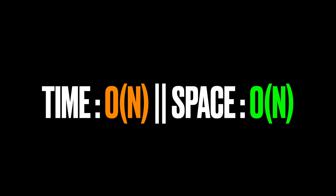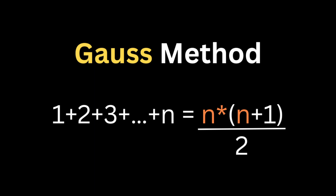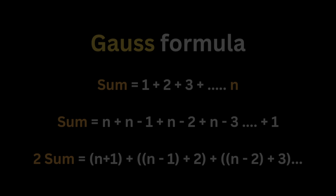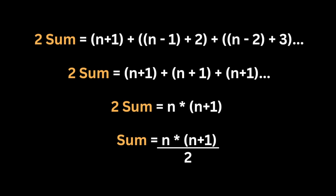To reduce space complexity to constant space, the best approach is the Gauss formula. We group all numbers from 0 to n, and the formula states that the sum of numbers from 0 to n equals n multiplied by (n + 1) divided by 2. To derive this: write the sum forward and reversed, pair them up — each pair sums to n + 1, and since there are n + 1 terms, the total is n(n + 1), so one sum is n(n + 1) / 2.